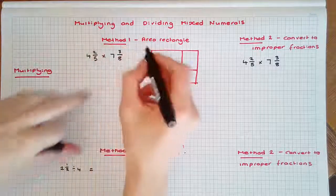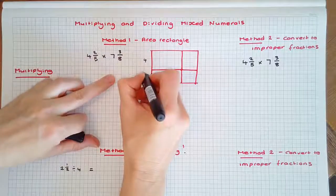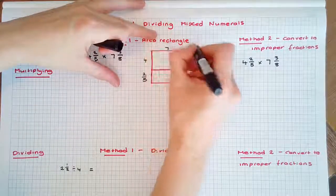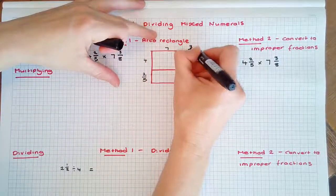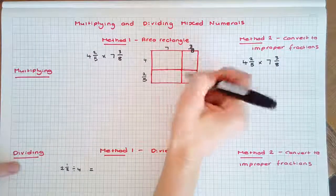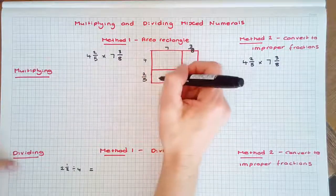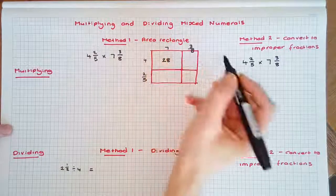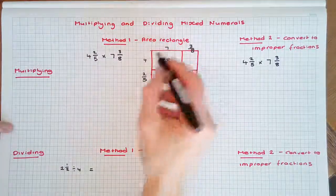Let's split the 4 plus 2/5 vertically and the 7 and 3/8 across the top. Now let's multiply using a multiplication grid or finding the area of each rectangle. 4 times 7 is 28. 7 times 2/5